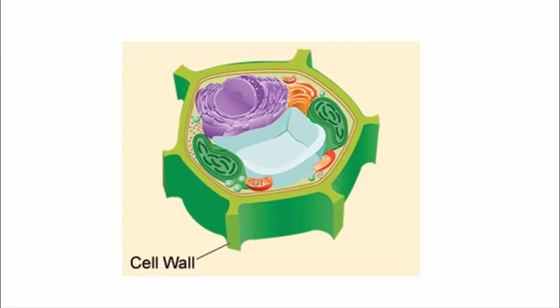The cell wall is made up of carbohydrates like cellulose and pectin, and it is also made up of polymers like lignin and cutin. The composition changes according to the different types of plant. The cell wall is also present in fungi.